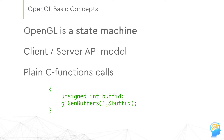The API itself is just a set of plain C functions you have to call. You will be calling many C functions like the one shown on this slide to set up the OpenGL state and render the scene into the frame buffer.